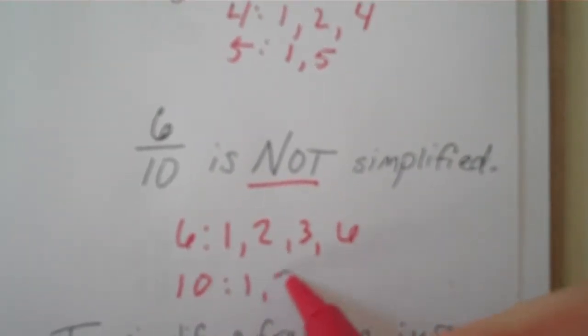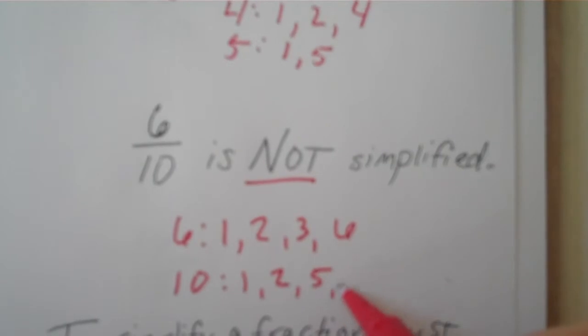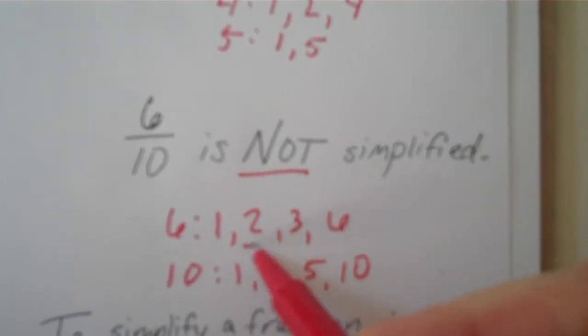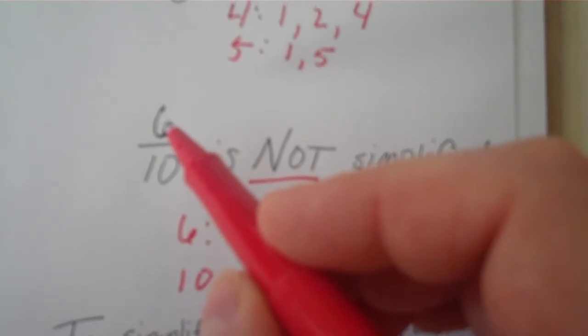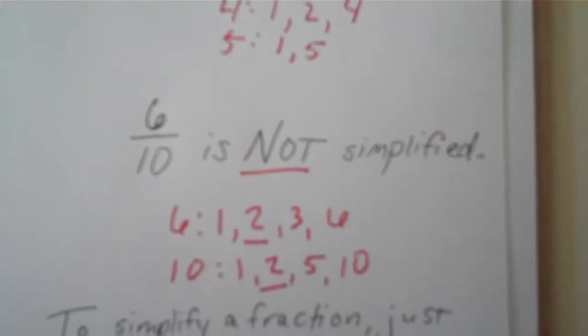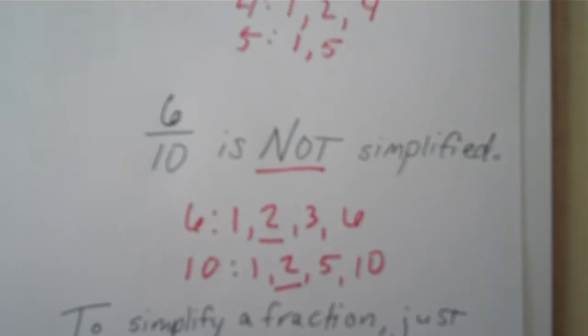10's factors are 1, 2, 5, and 10. I see 2 on both these lists, which means I could divide 6 by 2, and I could divide 10 by 2. So, it is not simplified.